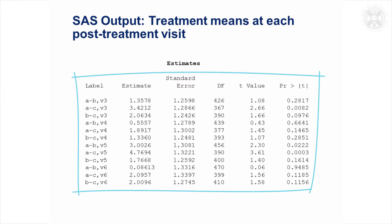By looking at some of the significant effects, we've got A minus C is significant at the first post-treatment visit, but not at some of the other ones. It's significant at the fifth, not at the fourth one, and not at the second one.